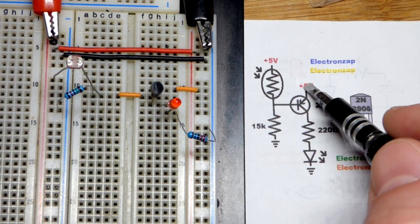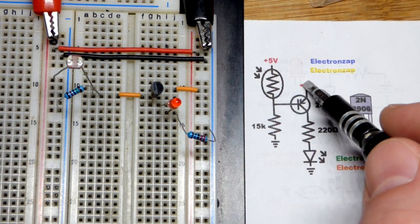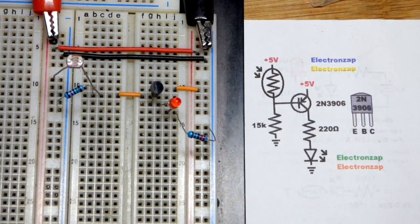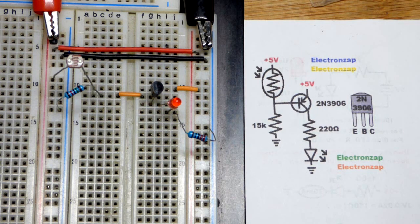No current from emitter to base means there's no current from emitter to collector, and the LED turns off as you see there.